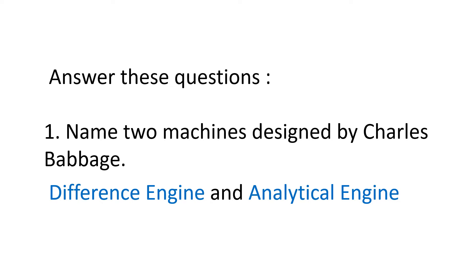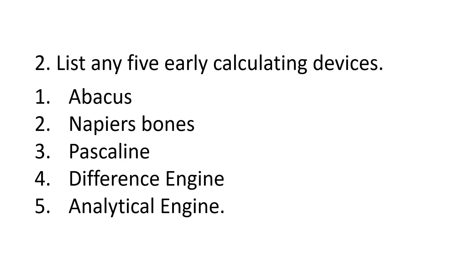Question number two: List any five early calculating devices. Answer: Abacus, Napier's Bones, Pascaline, Difference Engine, and Analytical Engine.